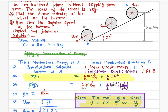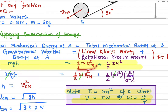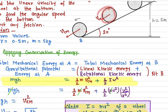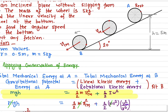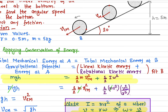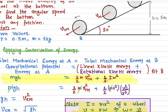The center of mass has only the linear kinetic energy: ½mv²_cm. The wheel is also rotating, so it has rotational kinetic energy. The rotational kinetic energy formula is ½Iω². In the rotational formula, mass is replaced by the moment of inertia I, and velocity v is replaced by the angular speed ω. This gives us the total kinetic energy.